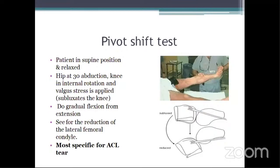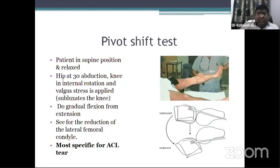The pivot shift test also checks ACL integrity. The patient lies supine and relaxed. The hip is in 30 degrees of abduction, the knee in internal rotation, and a valgus stress is applied. This maneuver subluxates the knee. Gradual flexion is then performed from extension and you observe the reduction of the lateral femoral condyle. This test is specific for ACL tear.